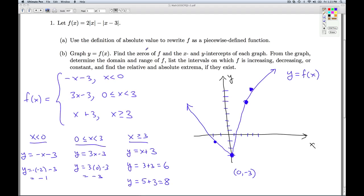Now we're asked to find the zeros of f, the x and y intercepts of the graph, determine the domain and range of the graph, the intervals on which it's increasing, decreasing constant, relative and absolute extrema if they exist. Okay, so we'll go through and answer each of those from this, from the function and its graph.